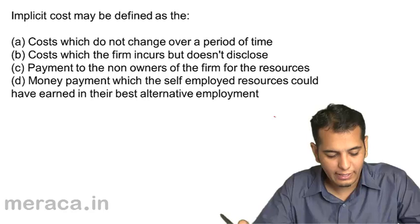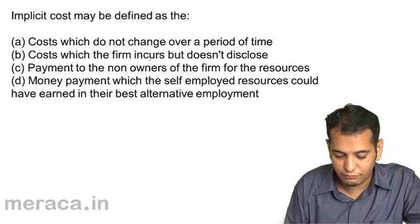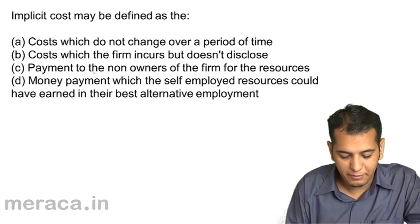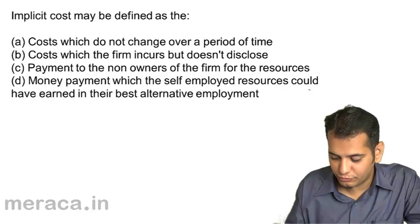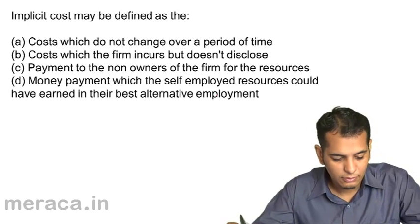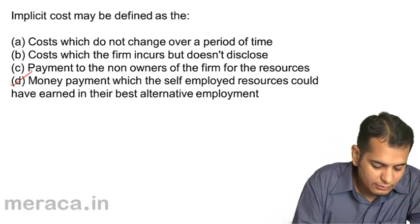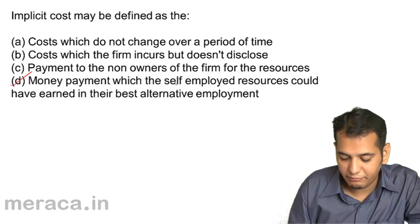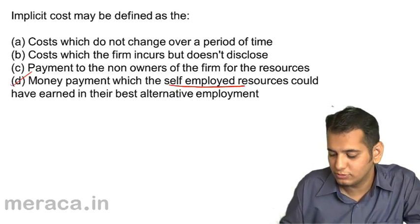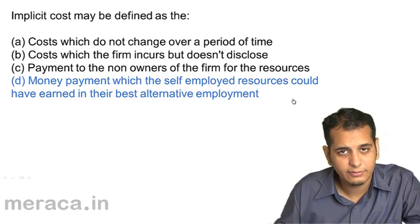Implicit cost may be defined as: (a) cost which does not change over a period of time, (b) cost which the firm incurs but does not disclose, (c) payment to the non-owners of the firm for resources, (d) the money payment which self-employed resources could have earned in their best alternative employment. The answer is D. Implicit costs are the money payment which self-employed resources could have earned with the best alternative employment. Let's check, that's the answer.